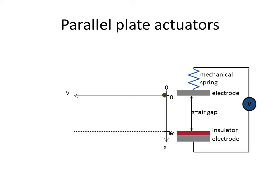So in this case we have the top electrode hanging on the mechanical spring system being movable and the bottom electrode being fixed.